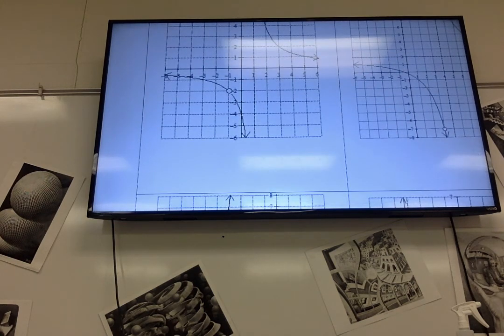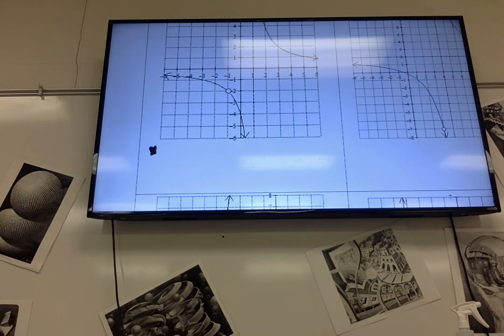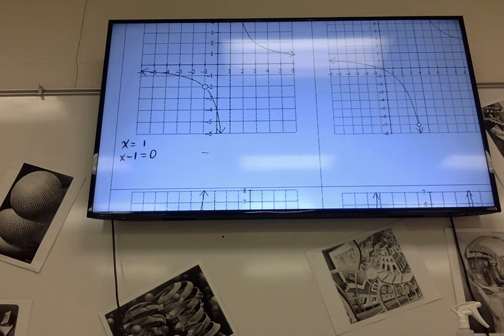That means on the bottom, I know on the bottom it was equal to 1, so the equation had to be, the factor had to be x minus 1. So I know that's on the bottom.